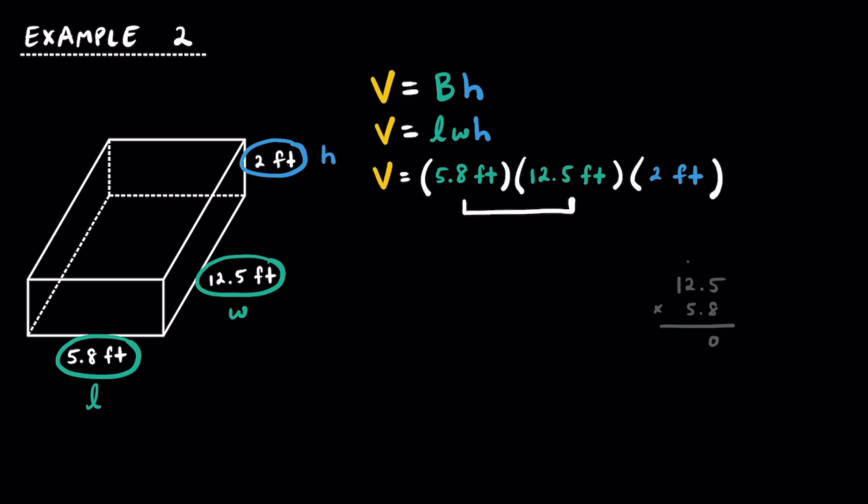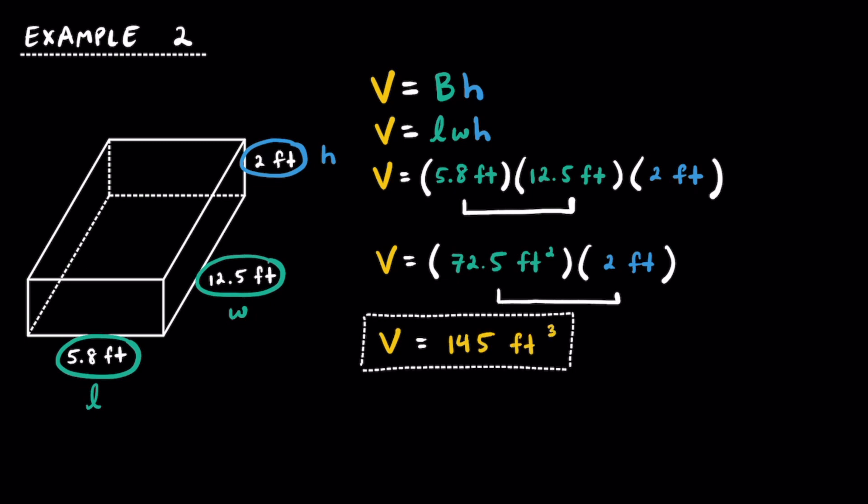Multiplying 5.8 by 12.5, we find out that the area of the base is going to be 72.5 square feet, and then multiplying that by the height, or 2 feet, we get a final volume of 145 cubic feet. Basically, we can fit a total of 145 of these little 1 foot by 1 foot by 1 foot cubes into this rectangular prism. While some of the cubes have to be cut because of the decimal side lengths, if you put those pieces together, you'll end up with 145 entire cubes.